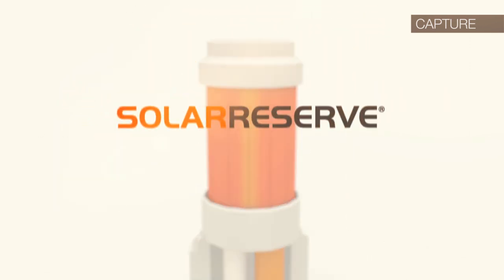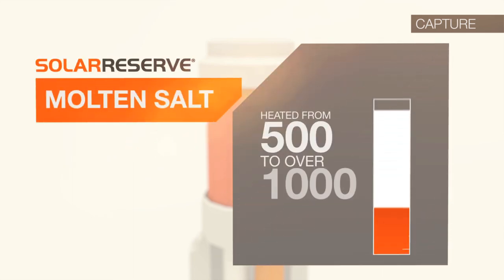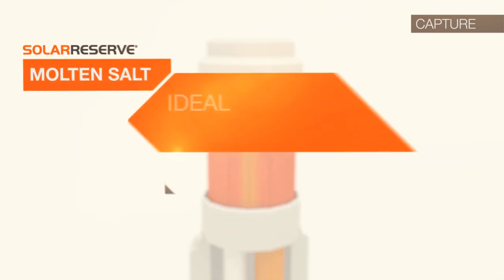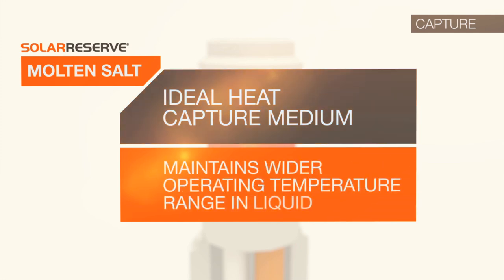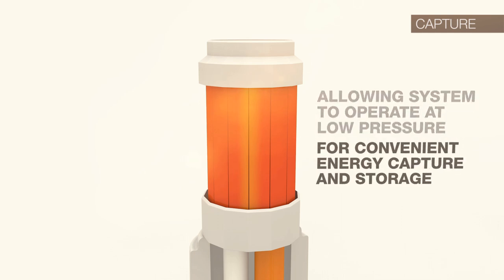In Solar Reserve's technology, the fluid utilized is molten salt which is heated from 500 to over 1,000 degrees Fahrenheit. Molten salt is an ideal heat capture medium because it maintains a wider operating temperature range in liquid state, allowing the system to operate at low pressure for superior and safe energy capture and storage.